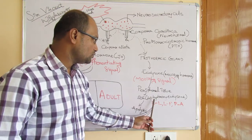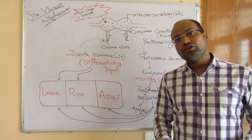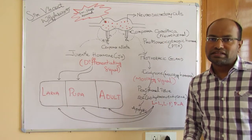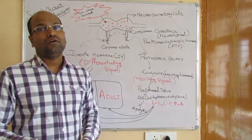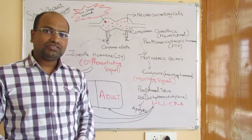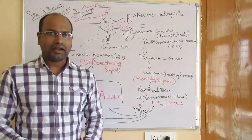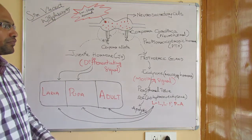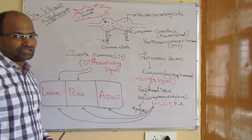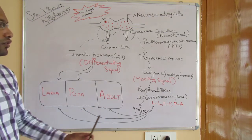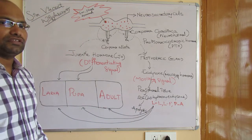In Drosophila organisms, 20-hydroxy ecdysone is released in two pulses. The first pulse gives rise to the wing and leg structures — specifically the imaginal disc cells responsible for developing wings and legs. The second pulse, generated in the organism, leads from the prepupal stage to the adult structure.